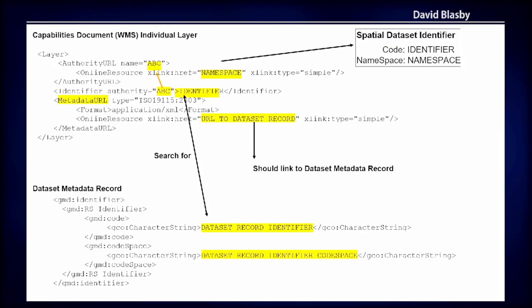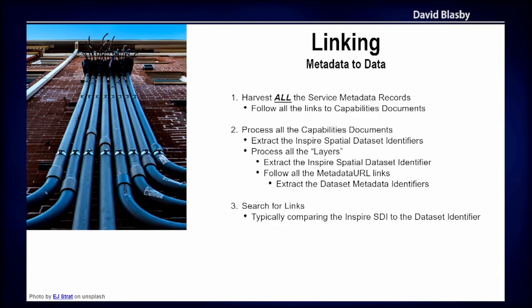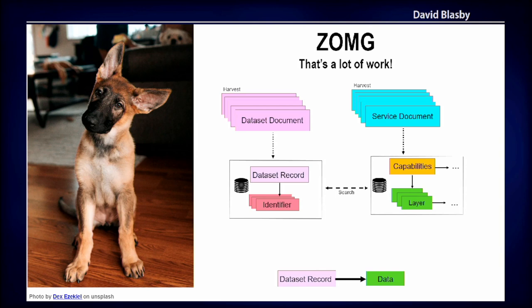To summarize: you harvest all the service metadata records, harvest all the dataset metadata records, follow all the links in your service metadata records to capabilities documents, follow all the links in your capabilities documents, do a bunch of matching based on extracted identifiers, and then you can link up your datasets and actual OGC services. It's simplified quite a bit here, but that's a lot of work.